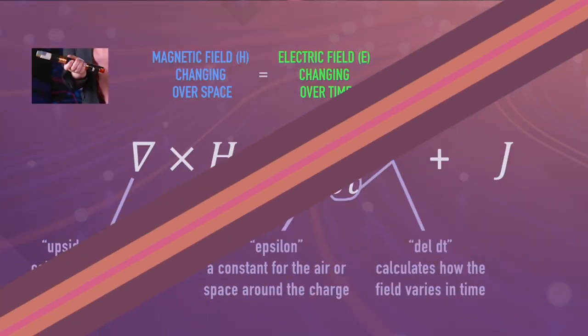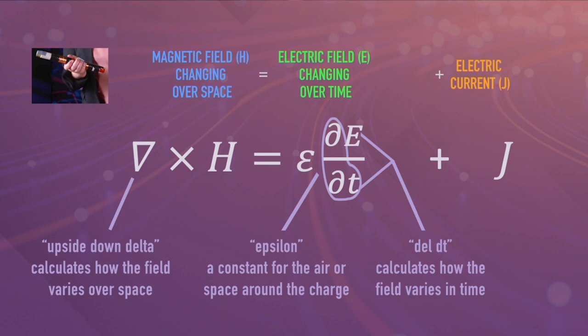Notice that Maxwell's four equations are actually two pairs: the first pair about fields, and the second pair about charges. First, the shake flashlight told us that a magnetic field changing over space yields an electric field that changes over time, plus some electric current. The part of the equation with the upside-down delta stands for the magnetic field varying in all three dimensions of space, and del dt stands for the electric field varying only in time.